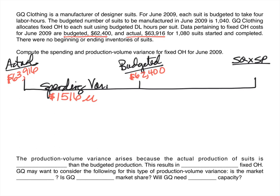Moving to the third peg, we need standard price and standard quantity. Standard quantity is defined as what should have happened at the actual level of production. The actual level of production is 1,080 suits, and each suit should have used four labor hours — so the standard quantity is the same as it was for variable overhead, because the cost driver, direct labor hours, is the same. Standard price, however, was not given to us in this problem, so we'll have to calculate it.